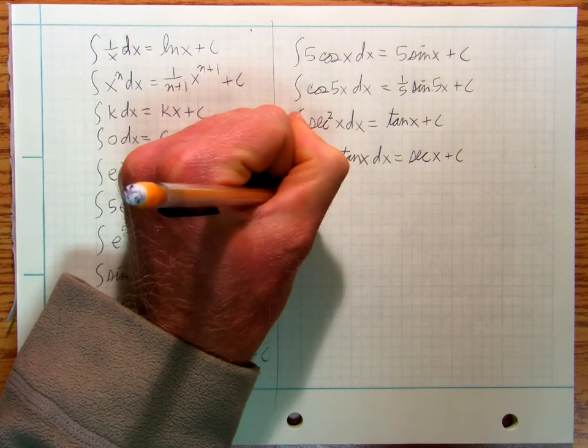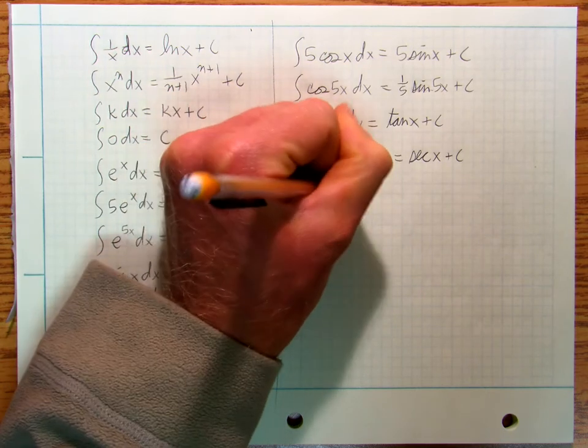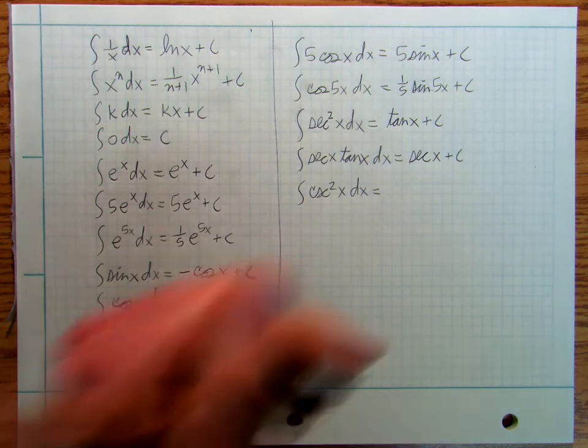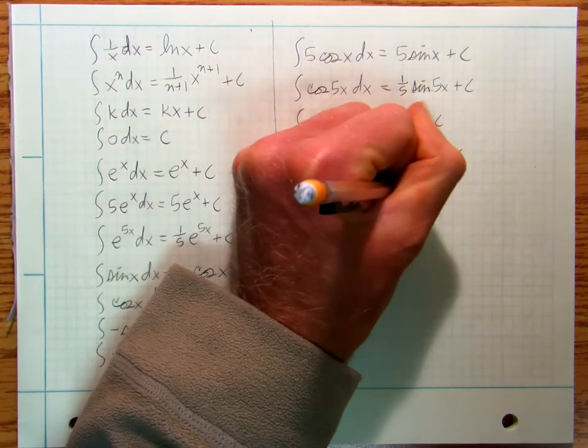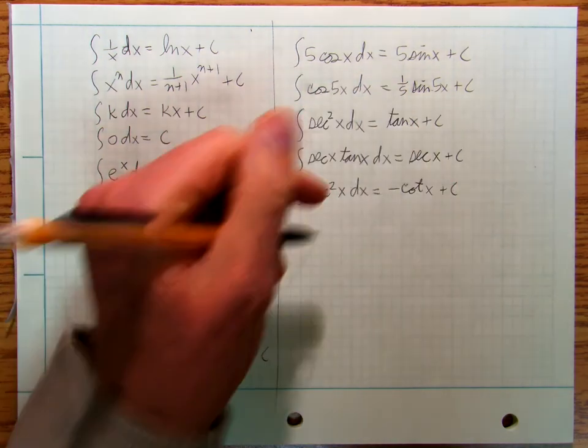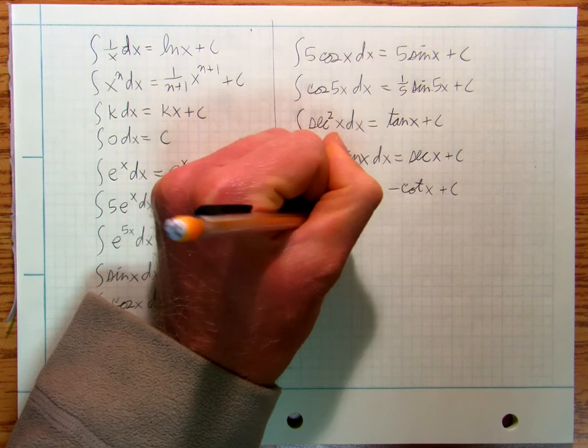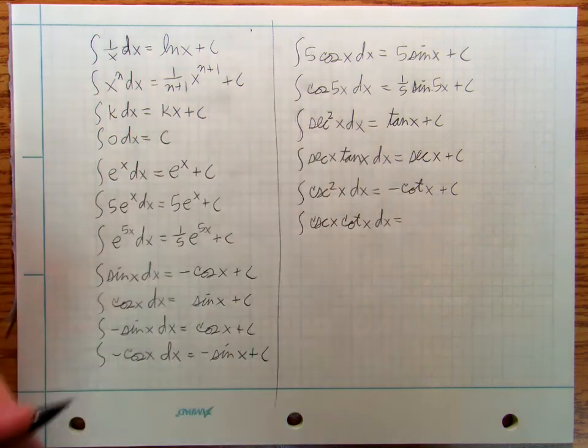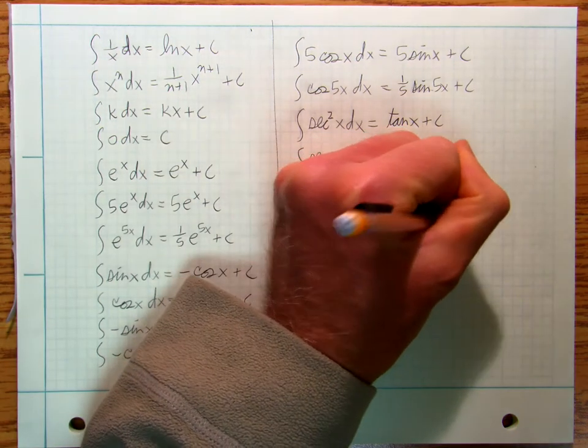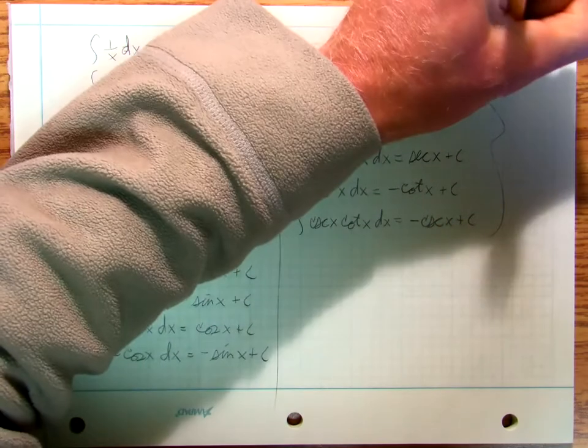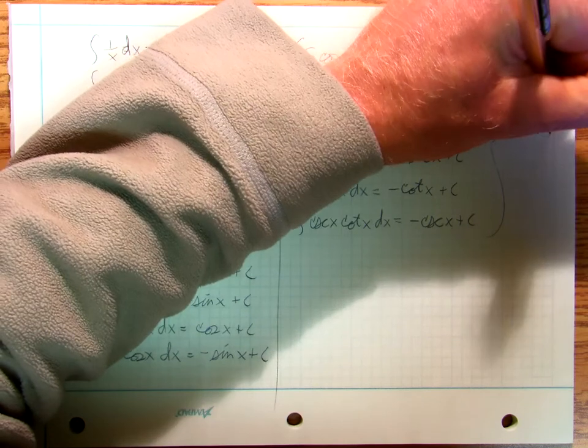And then you've got the integral of cosecant squared x dx, that is going to be negative cotangent x plus c. And the integral of cosecant x cotangent x dx is going to be negative cosecant x plus c. So these are all sort of memorized.